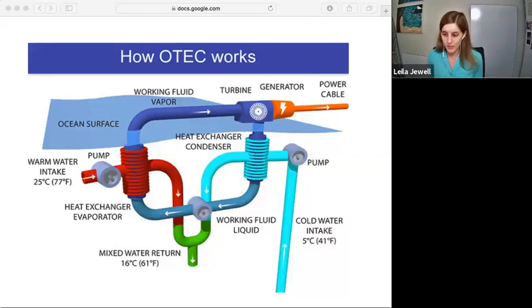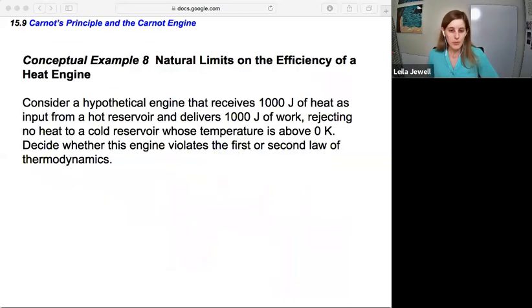All right, one more thing. Conceptual example. The natural limits on the efficiency of a heat engine. Consider a hypothetical engine that receives 1,000 joules of heat as input from a hot reservoir and delivers 1,000 joules of work, rejecting no heat to a cold reservoir whose temperature is above zero Kelvin. Decide whether this engine violates the first or second law of thermodynamics.